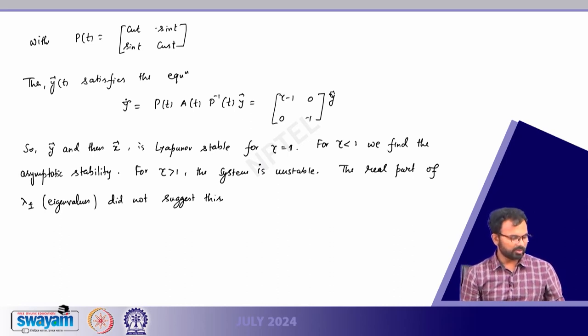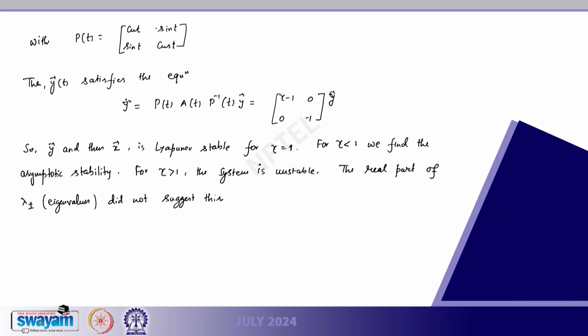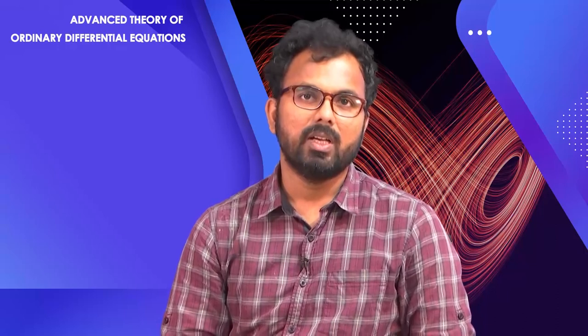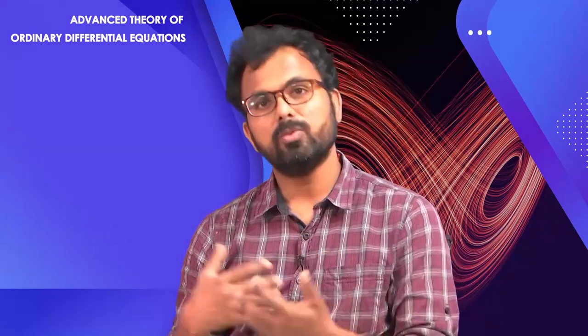We will continue this discussion. The proof of Theorem 1 is a generalization of what I showed for the 2×2 system, so I leave it to the reader — you can find it in the referenced books. We will continue when A(t) is periodic and slowly move towards nonlinear systems. Thank you for your attention and I will see you in the next class.